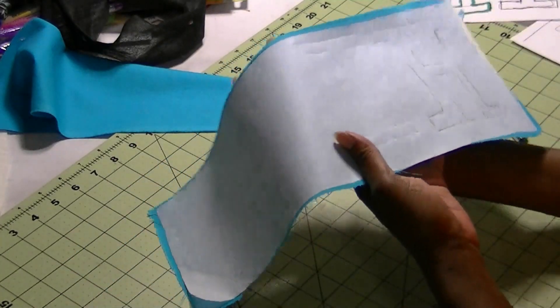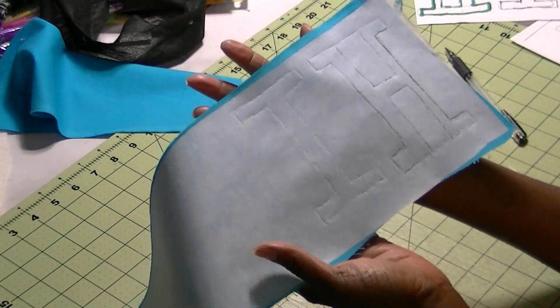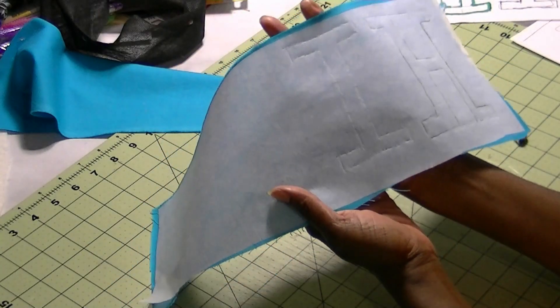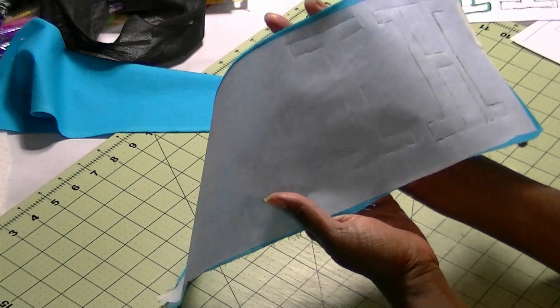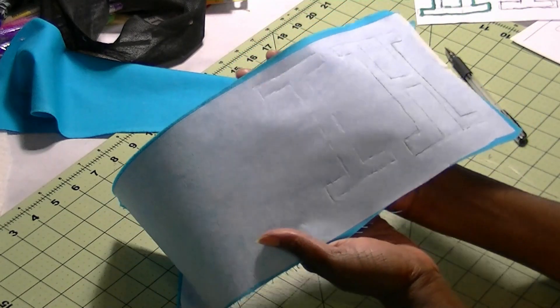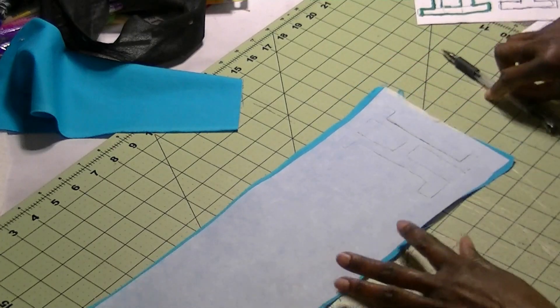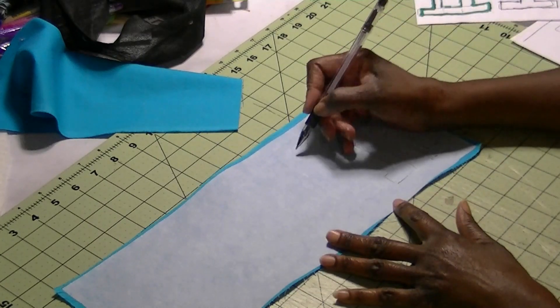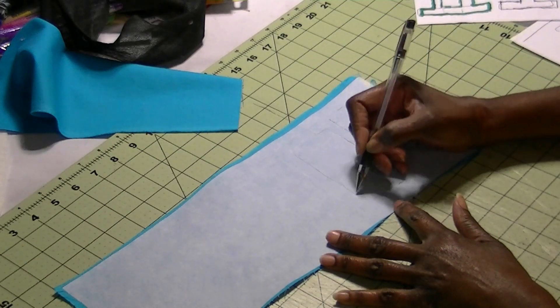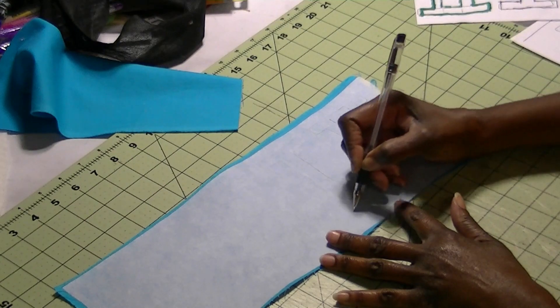Now when I trace the eye out, I want you to see, I hope the camera picks this up. You don't see any lines as far as ink goes. But if you look close enough, you'll see the indention marks. And all I have to do now is simply trace out the indention marks that were made.